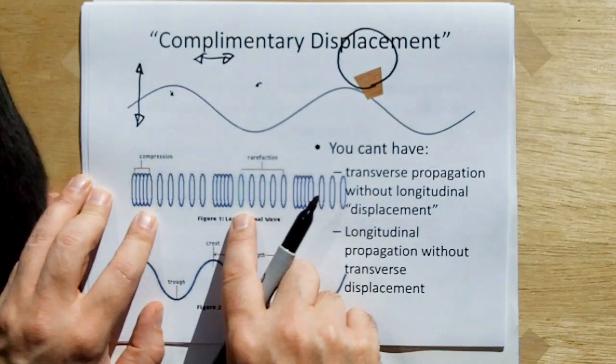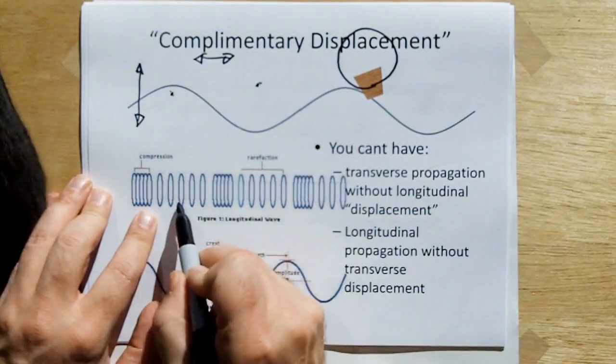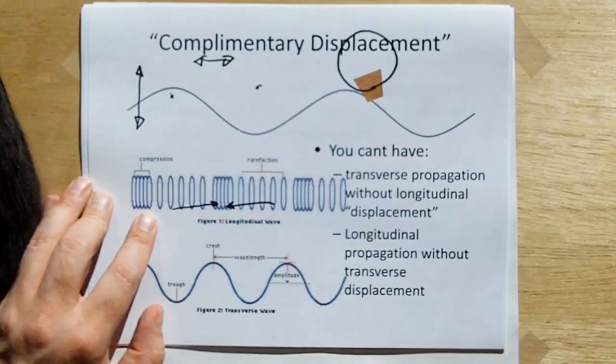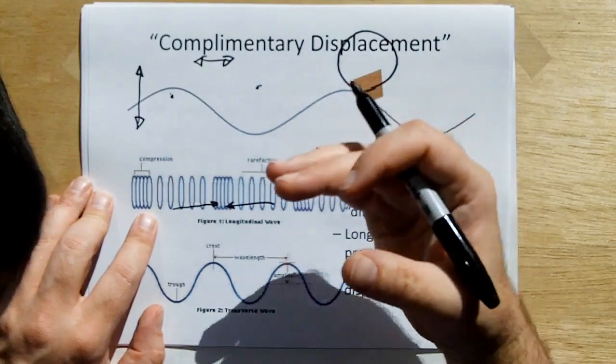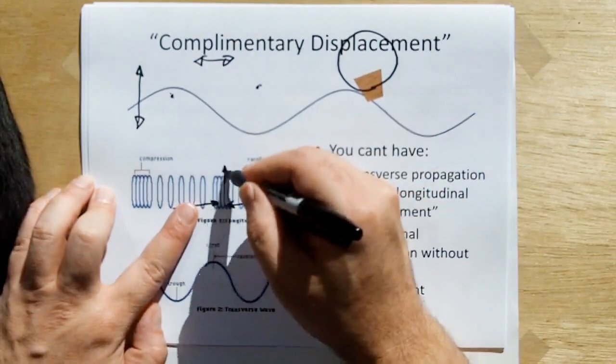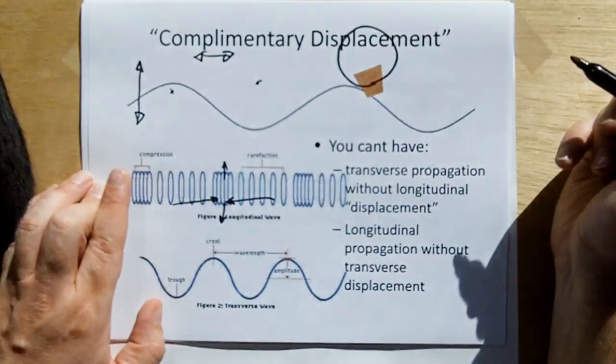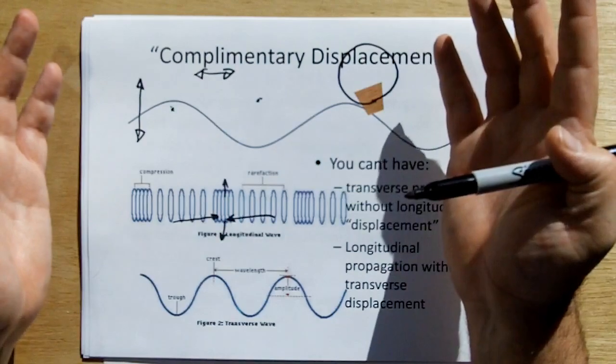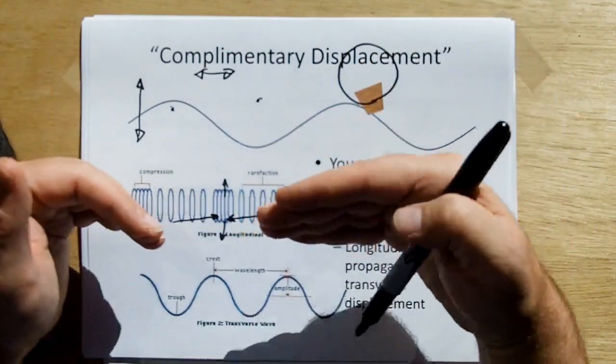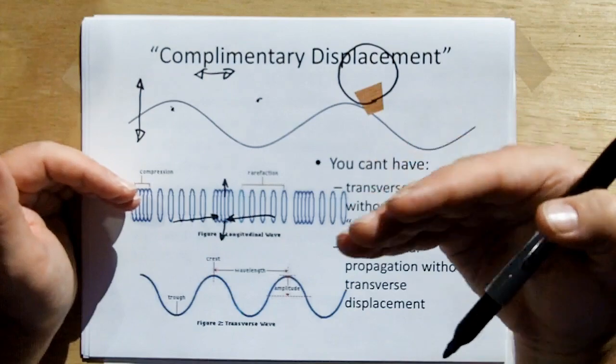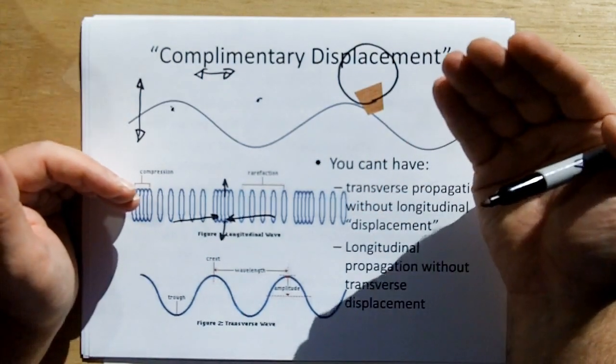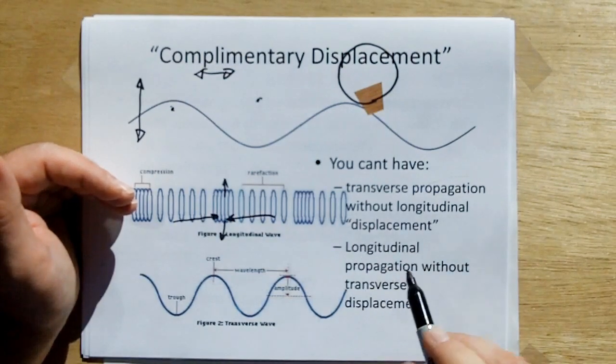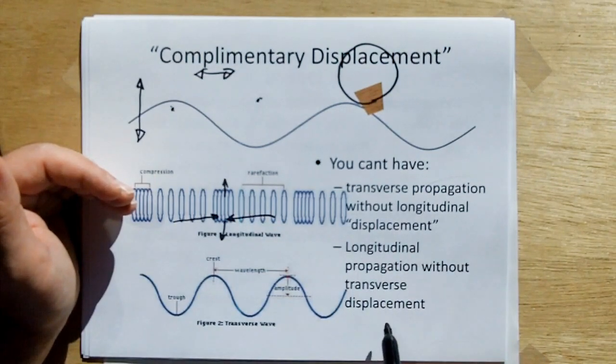For a longitudinal wave, when the rings of the slinky compress, especially like sound compressed in air, if you've got stuff being compressed, it's going to want to go the other way. It's got to go somewhere. So, even in longitudinal waves, there's complementary displacement. And so what we understand from this is you can't have transverse propagation without longitudinal displacement. And you can't have longitudinal propagation without transverse displacement.